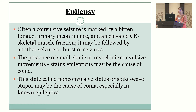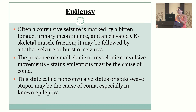Causes of unconsciousness include convulsions, which may be non-convulsive seizures. On physical examination, look for a bitten tongue, urinary incontinence, or elevated CPK — these may indicate a seizure. Also consider small clonic or myoclonic movements, status epilepticus, non-convulsive status, or spike-wave stupor. Sometimes a convulsion is unobserved, and you wait to see if the patient recovers, noting how long they take to come out of the post-ictal state.